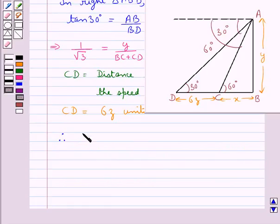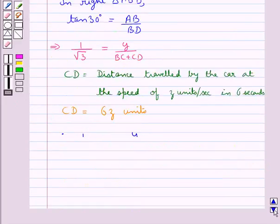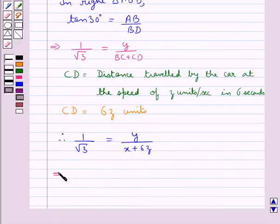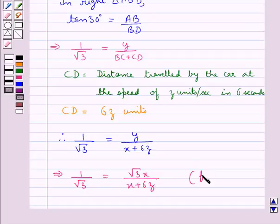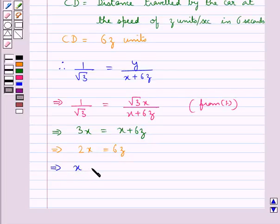Therefore, 1 upon root 3 is equal to Y upon BC plus CD, that is X plus 6Z. From equation 1, Y equals root 3 times X. Substituting, we get 1 upon root 3 equals root 3X upon X plus 6Z. Cross multiplying, we get 3X equals X plus 6Z, which gives us 2X equals 6Z, so X equals 3Z.